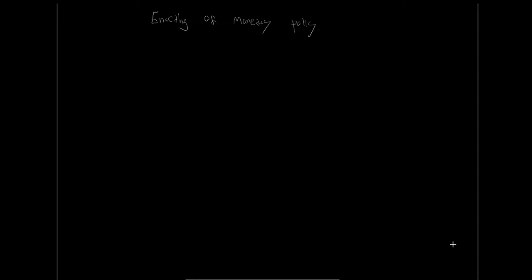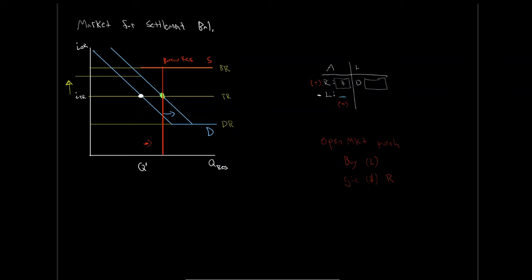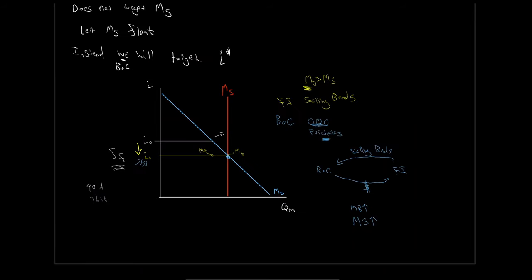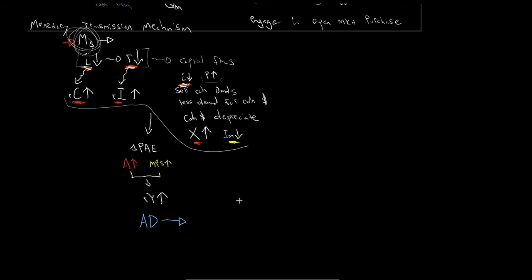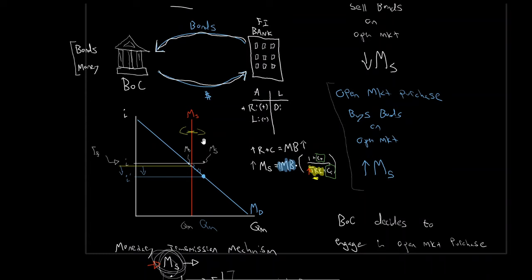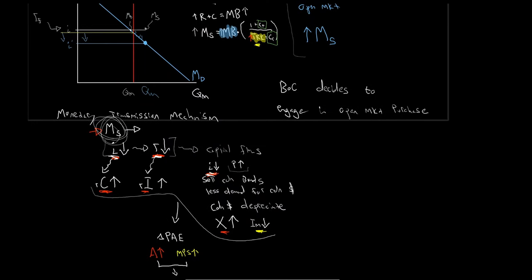Let's bring this all together. We've taken a look at the market for settlement balances, the overnight interest rate, and this basis that the overnight interest rate is really our risk-free rate. We looked at the spread between the bank rate and the deposit rate, how the Bank of Canada utilizes this, the liquidity preference framework, open market operations, and how by changing our money supply we get our monetary transmission mechanism.